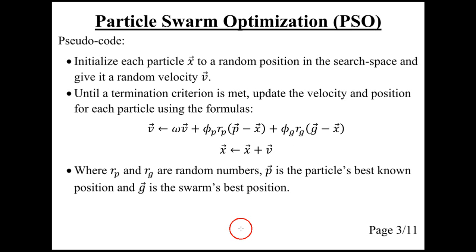A popular heuristic optimizer is known as particle swarm optimization. We have a swarm of particles where the position in the search space is denoted x, and each particle also has a velocity v. These are initialized with random values and updated using these equations. The equation for the velocity has a few parameters which the user can set: the parameter omega, phi p, and phi g. And when we have updated the velocity, we add it to the particle's current position, and we get the new position.